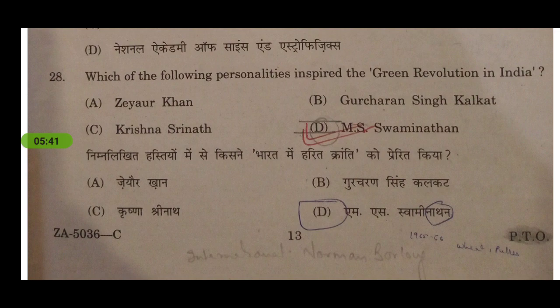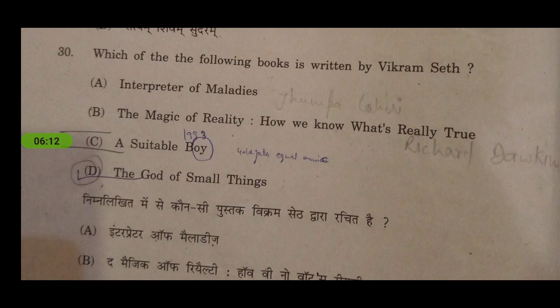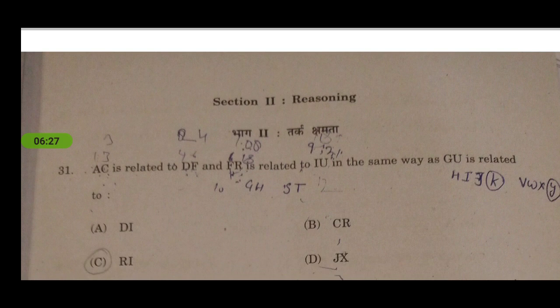Which of the following personalities inspired the Green Revolution in India? It was MS Swaminathan — a very common question. What is the motto incorporated under our national emblem? It is Satyameva Jayate. Most questions are from standard GK or current affairs, while in the 2018 online paper they are more analytical. Which of the following books is written by Vikram Seth? It is A Suitable Boy. The God of Small Things is written by Arundhati Roy.